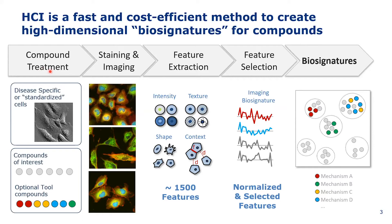High-content imaging and cell painting specifically are fast and cost-effective methods to generate a biosignature for compounds. Compared to alternatives such as high-throughput transcriptomics, high-content imaging is still more reliable, faster, and cheaper. The cells of interest can be a general cell type such as a U2OS cell line, or more specific for your application — for instance, primary human hepatocytes if you want to use this in a toxicity context. You treat your cell line with your compound of interest, incubate, stain, and image under the microscope, then extract all possible features within the reach of your software — intensity, cell or nucleus morphology, localizations, or spatial relationships between compartments and between cells.